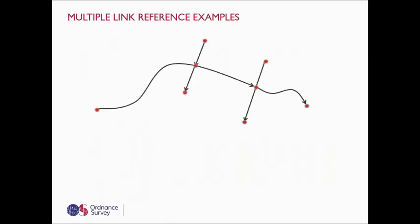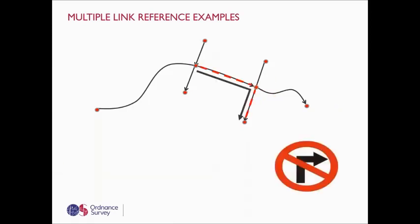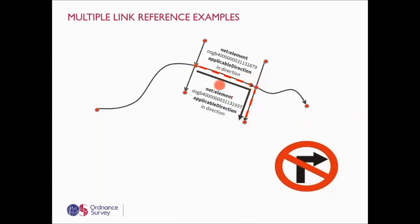A graphical example shows digitizing direction arrows on all links, with a turn restriction across two links — one applicable in-direction, the other also in-direction. Here we are not allowed to turn right from the first link onto the second link. The links are ordered within the product, so the restrictions should make sense: the first link in the product is first, the second is second as you look at it.